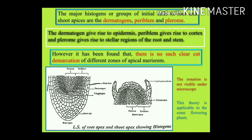Root cap is produced by dermatogen in dicotyledons. Due to the presence of the root cap, the position of the root apex is sub-terminal. Therefore, maximum growth in the root takes place behind the apex.